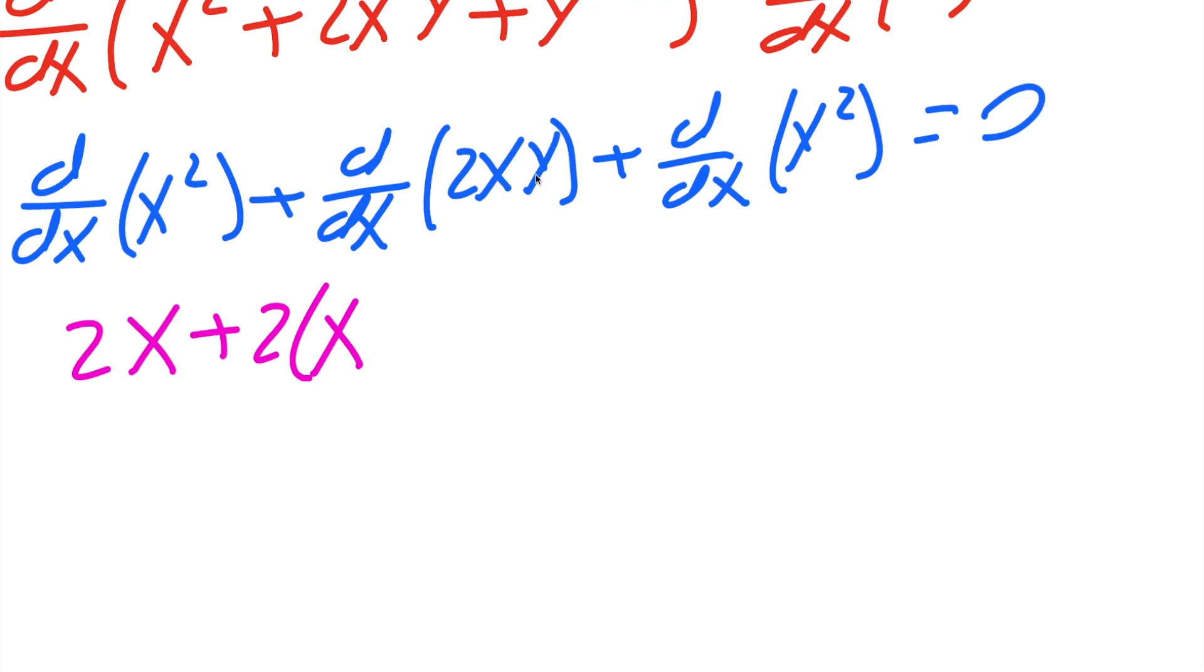times the derivative of y, and the derivative of y would give us dy/dx, plus y times the derivative of the first term. The derivative of x is just one, so we can close parentheses, plus